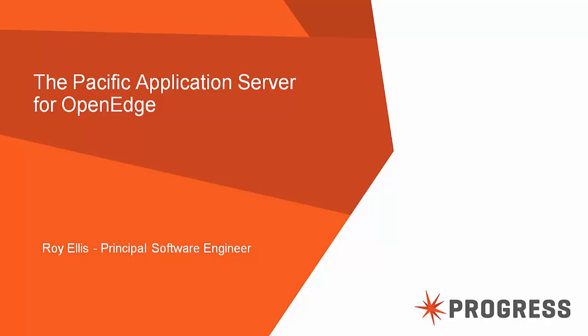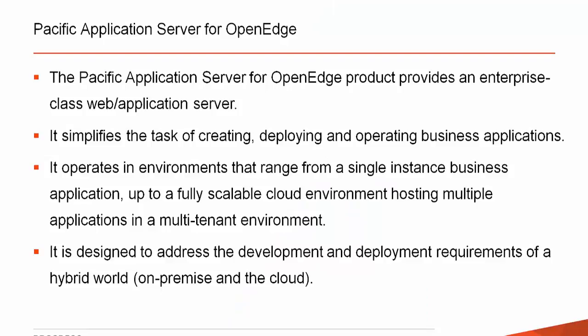Roy Ellis: Thank you, Rob. I've been with Progress going on 20 years. I was part of the team that brought you the version 9 App Server, Web Speed, and Admin Server. I'm very excited about the Pacific App Server for OpenEdge because it's a huge departure and a great improvement over the old infrastructure. The Pacific Application Server is an enterprise-class web application server. It can run in a single instance for small applications but fully scale to a cloud environment hosting multiple applications in a multi-tenant environment — cloud, intranet, and hybrid.